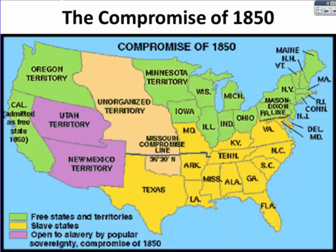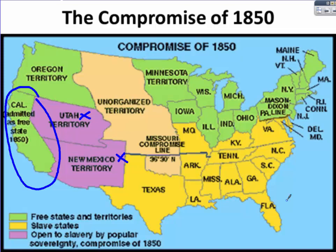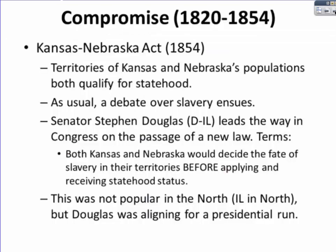Here is a map of this decision. California is admitted as a free state, while Utah and New Mexico are subject to future votes on the issue of slavery. In 1854, the Kansas-Nebraska Act brought up the issue of slavery again, because both Kansas and Nebraska's populations qualified for statehood. Senator Stephen Douglas, a Democrat from Illinois, led the way in Congress on the passage of a new law. The terms were that both Kansas and Nebraska would decide the fate of slavery in their territories before applying for and receiving statehood status.